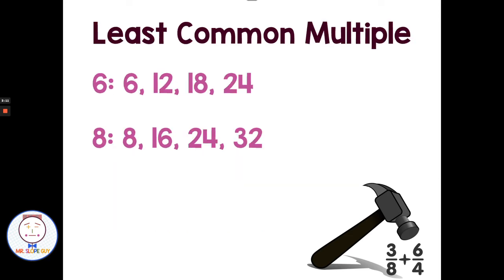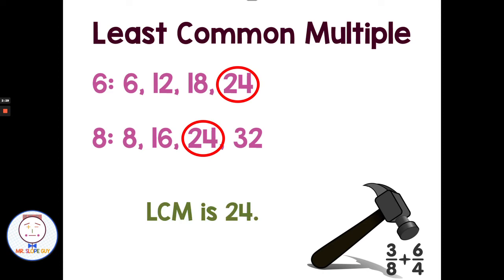Remember, least common multiple: if I'm counting by sixes — six, twelve, eighteen, twenty-four — and counting by eights — eight, sixteen, twenty-four, thirty-two — the least common multiple is the smallest multiple on both lists. In this case, our LCM would be twenty-four. So if I had a problem with six and eight in the denominator, I could clear it by multiplying both sides by twenty-four.